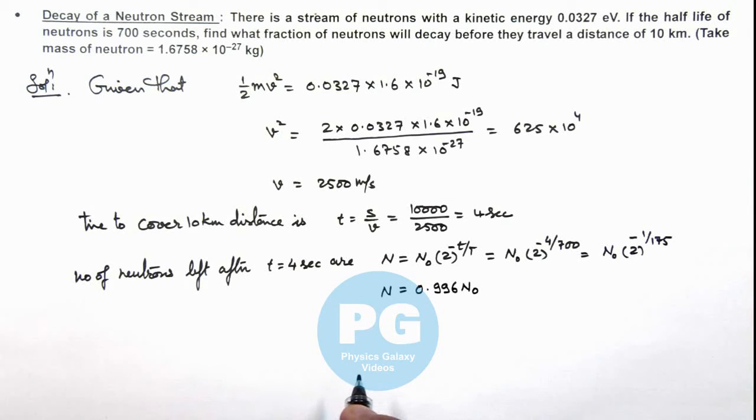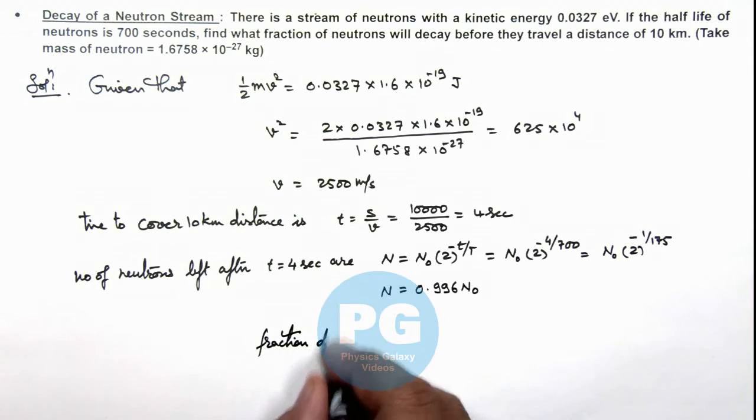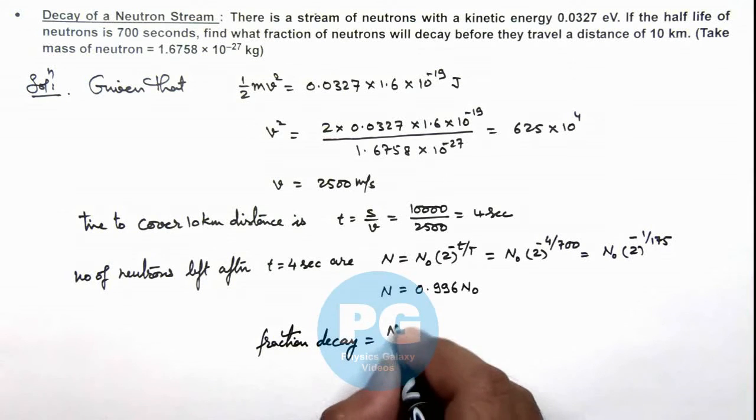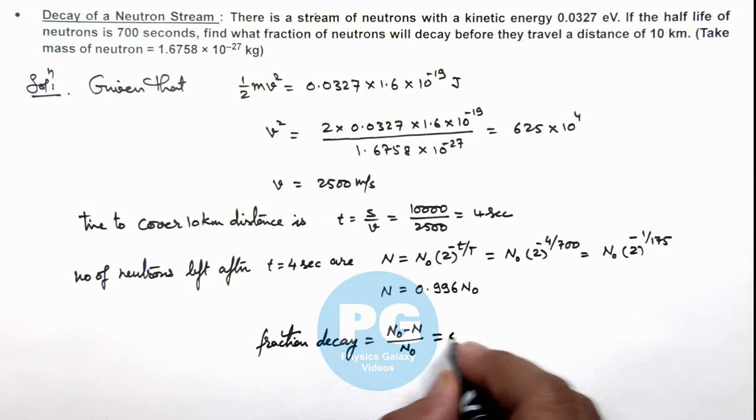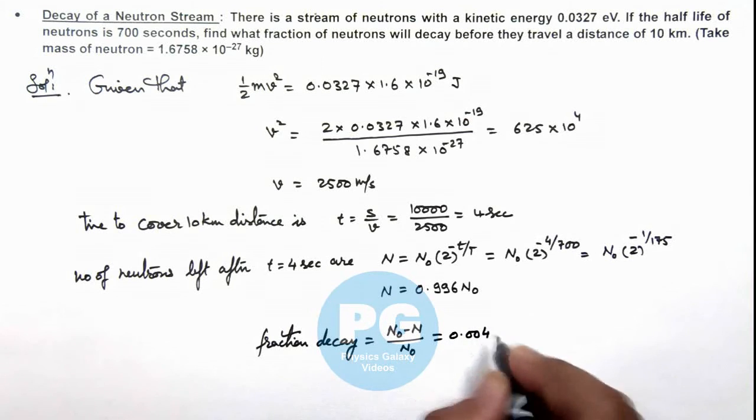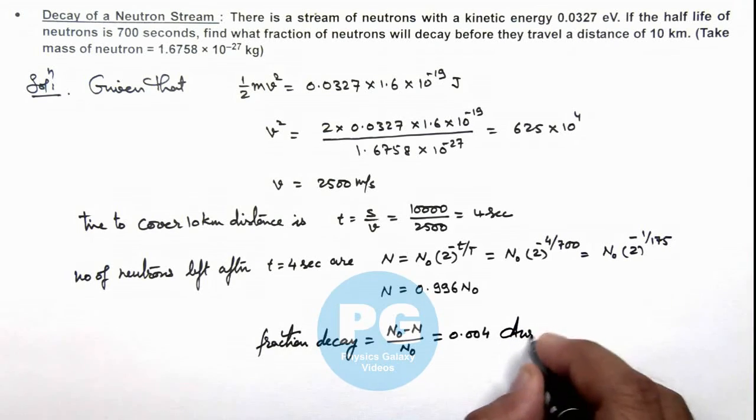That means in this situation, if we calculate the numerical value of number of atoms left after this much time, then we can see the fraction of number of atoms that decay can be given as (N₀ - N)/N₀. On simplifying, this gives us 0.004. So 0.004 is the fraction which will decay in 4 seconds time. That will be the result of this problem.